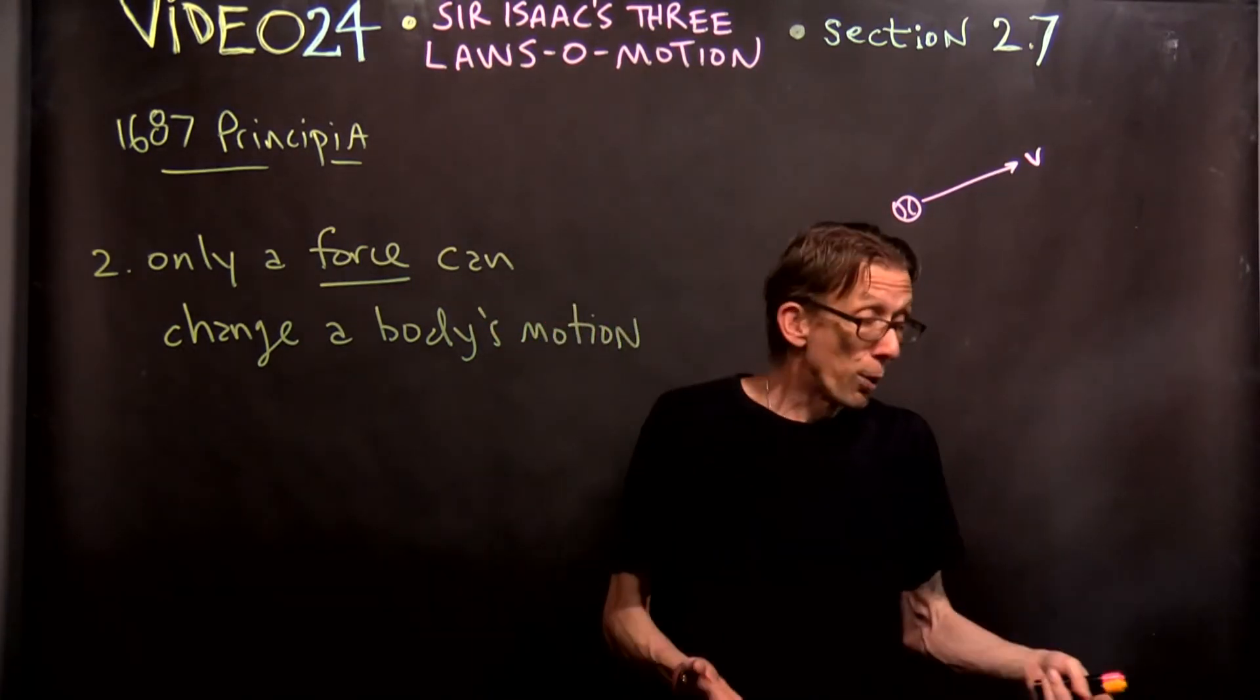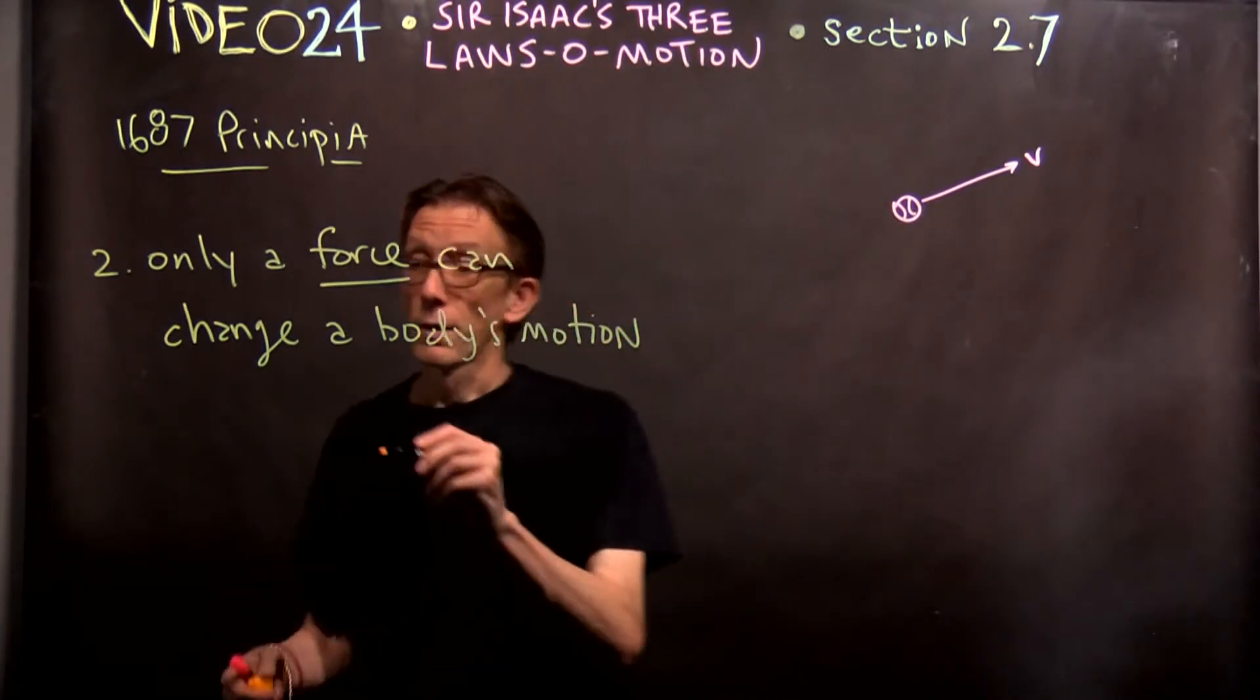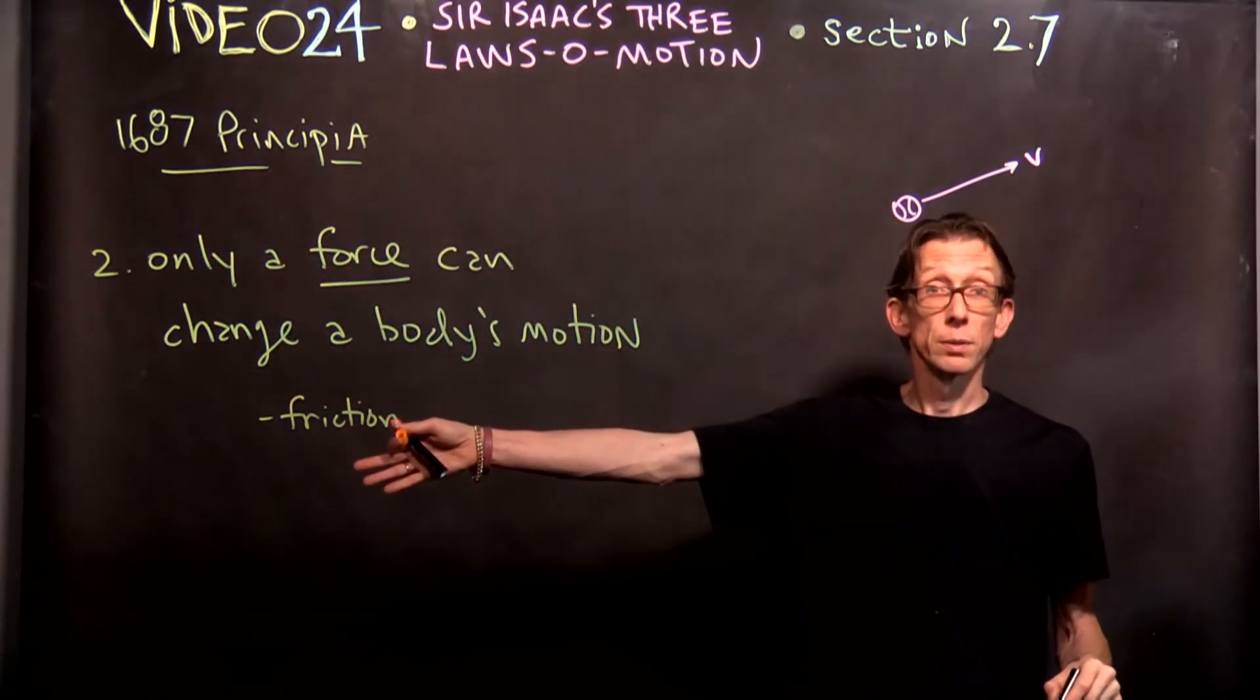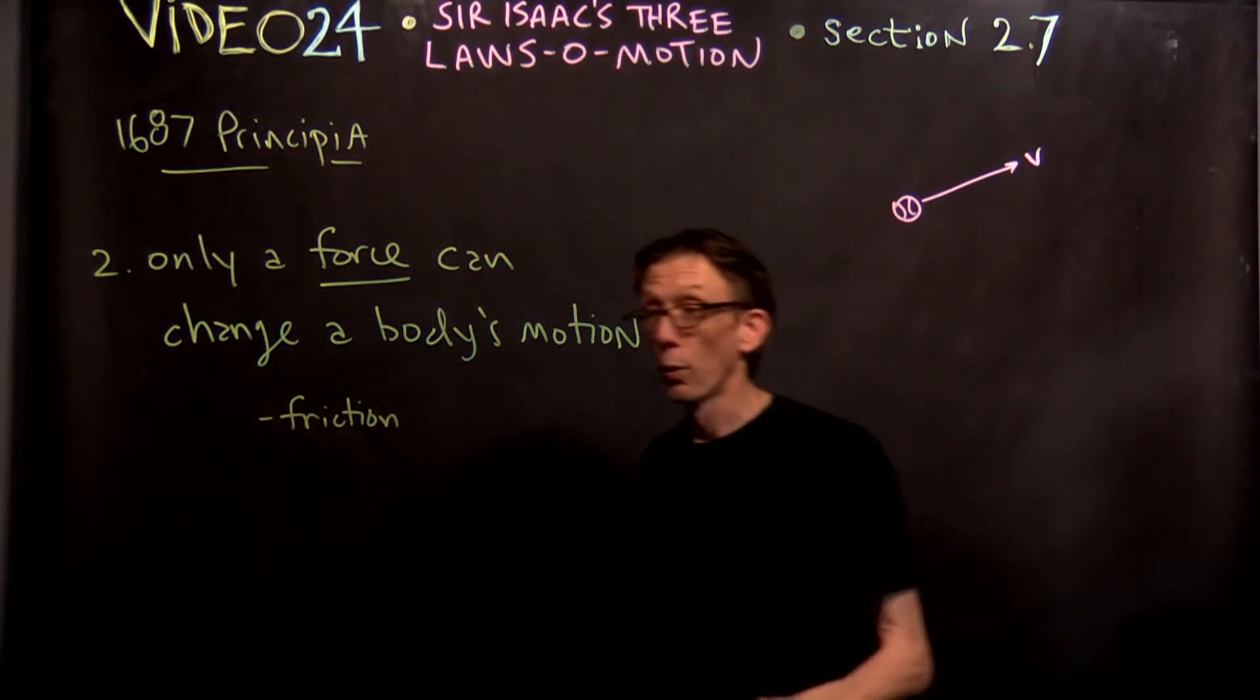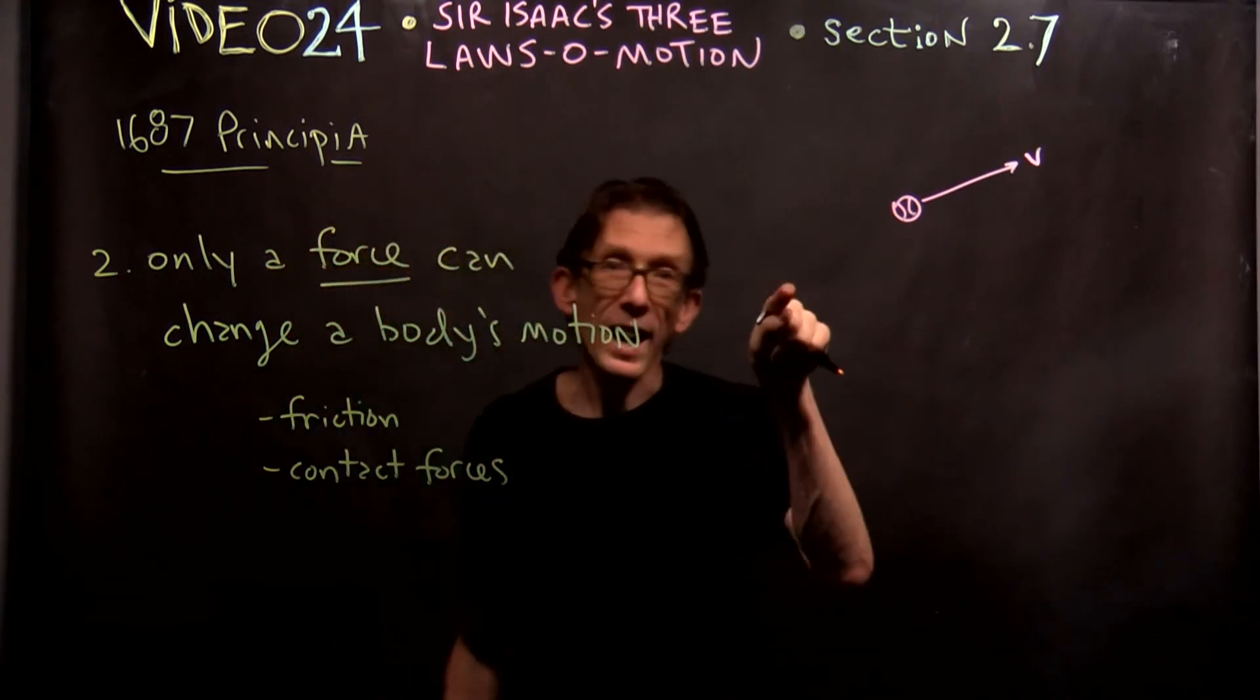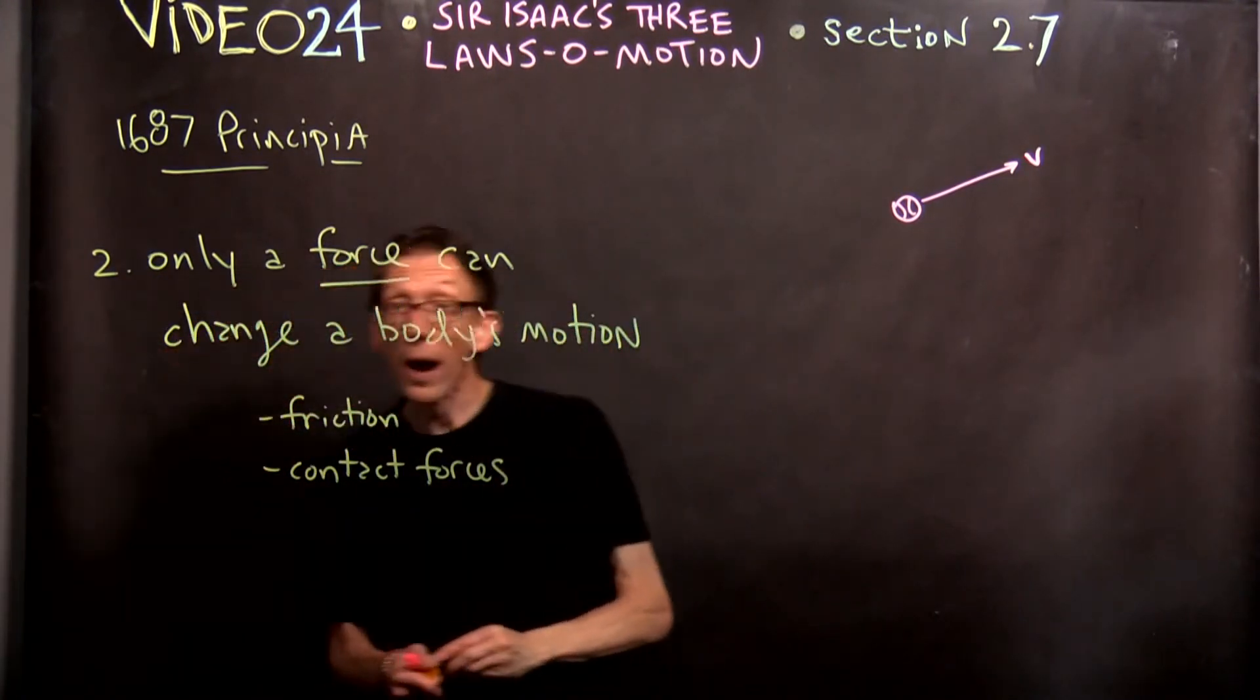Only a force can change a body's motion. For example, me pushing the eraser across the table, it comes to rest, right? A force must be acting on it. That force, the force can be, in that case, the force would be friction. That's a force. That's what keeps the eraser from going off the end of the table. Right? Friction. Another one that's a force, you know, contact forces. I push up against the glass. Right? It's a contact force. Okay? What else do I have here? Weight.